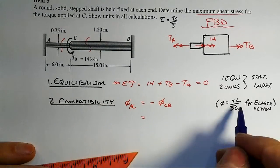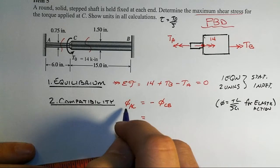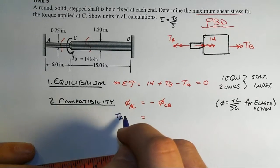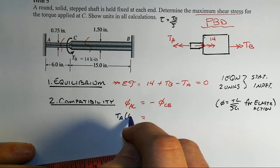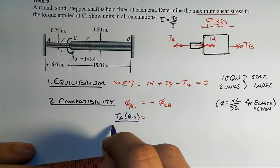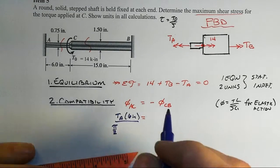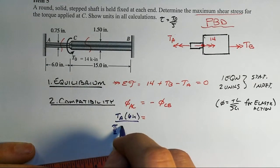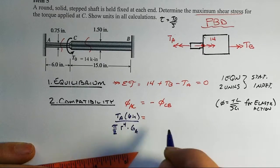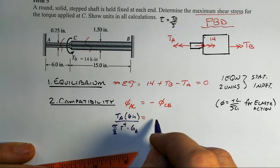So we'll apply here our TL over JG for the left-hand segment. That would be TA times its L, which is 6 inches, over the J, which would be pi over 2. And the radius here at the left, let's just call it R to the 4th, and then times G for that left-hand segment. You'll see why I did it like this in just a moment.